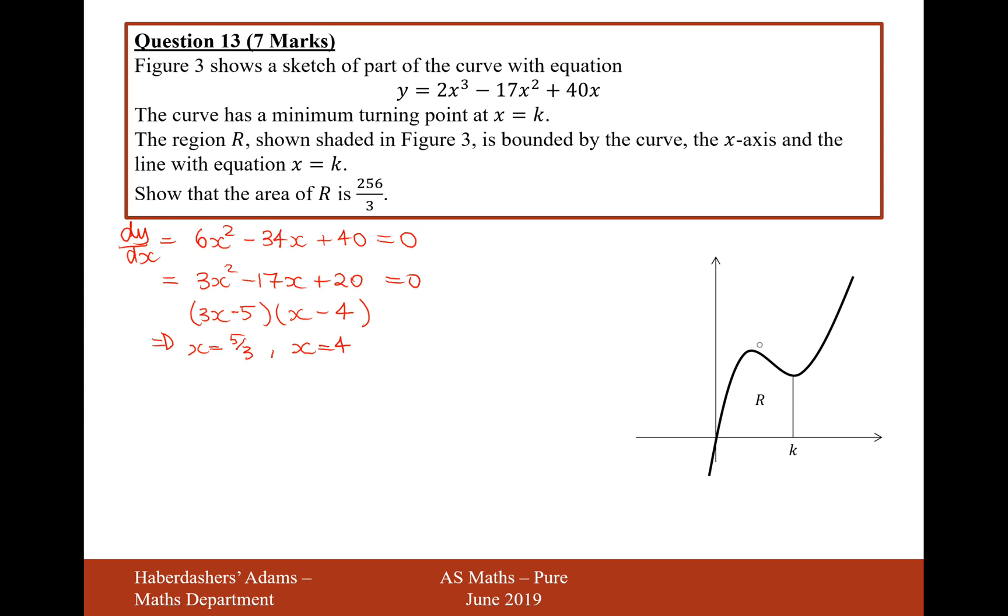We can see here that this lower one will refer to this maximum point, and the 4 will refer to this minimum point here. So, therefore, as 4 is bigger, it is the minimum turning point. Okay, so now we know that k is equal to 4.